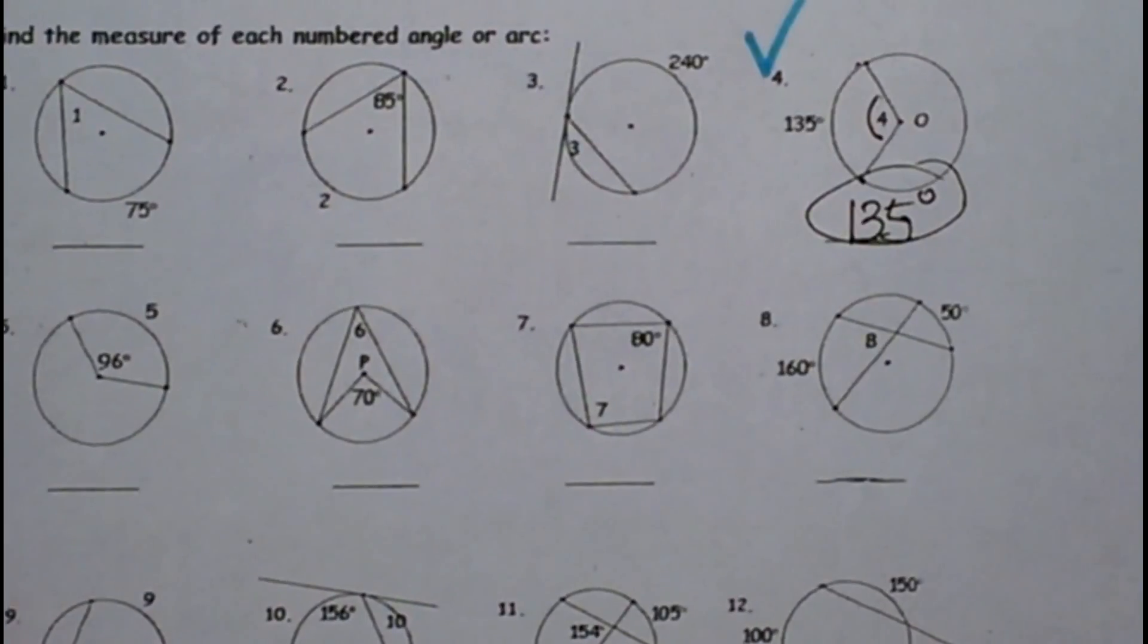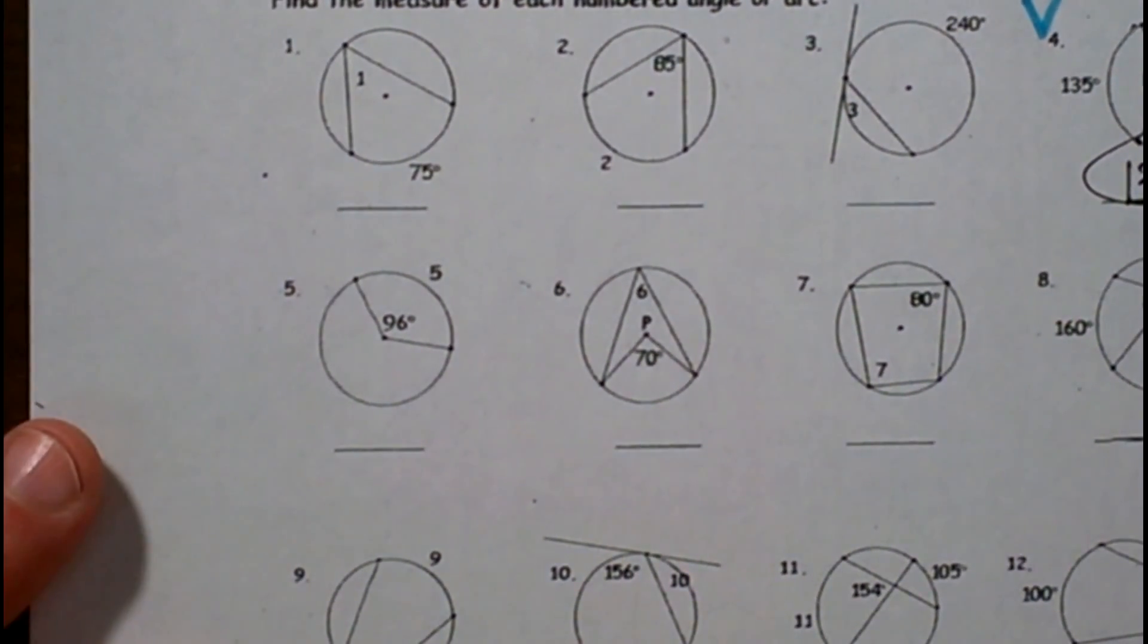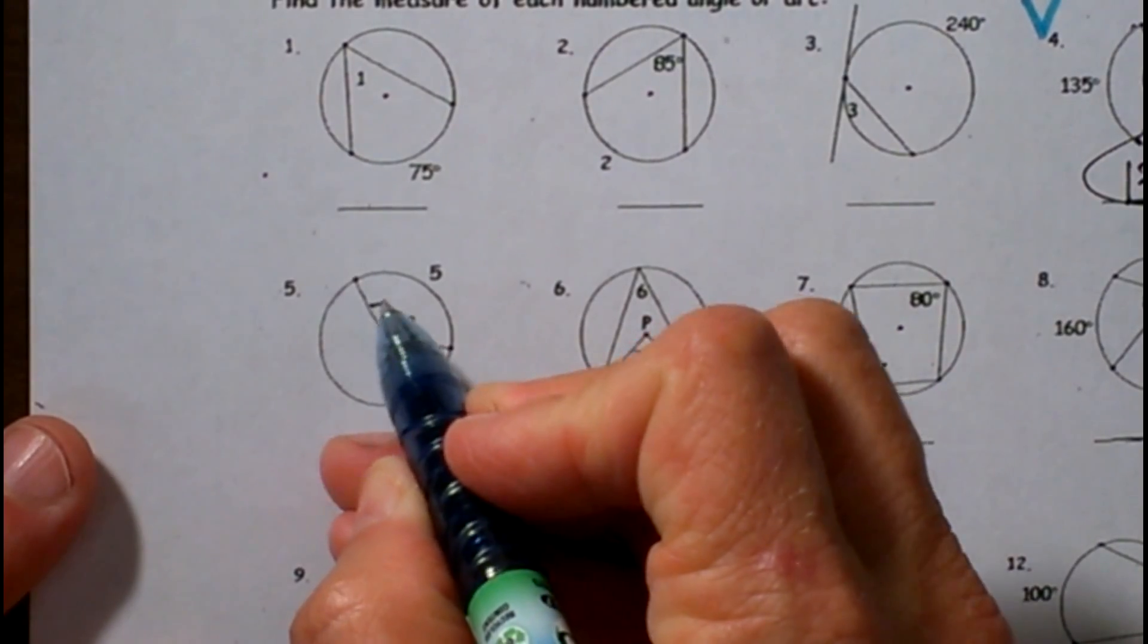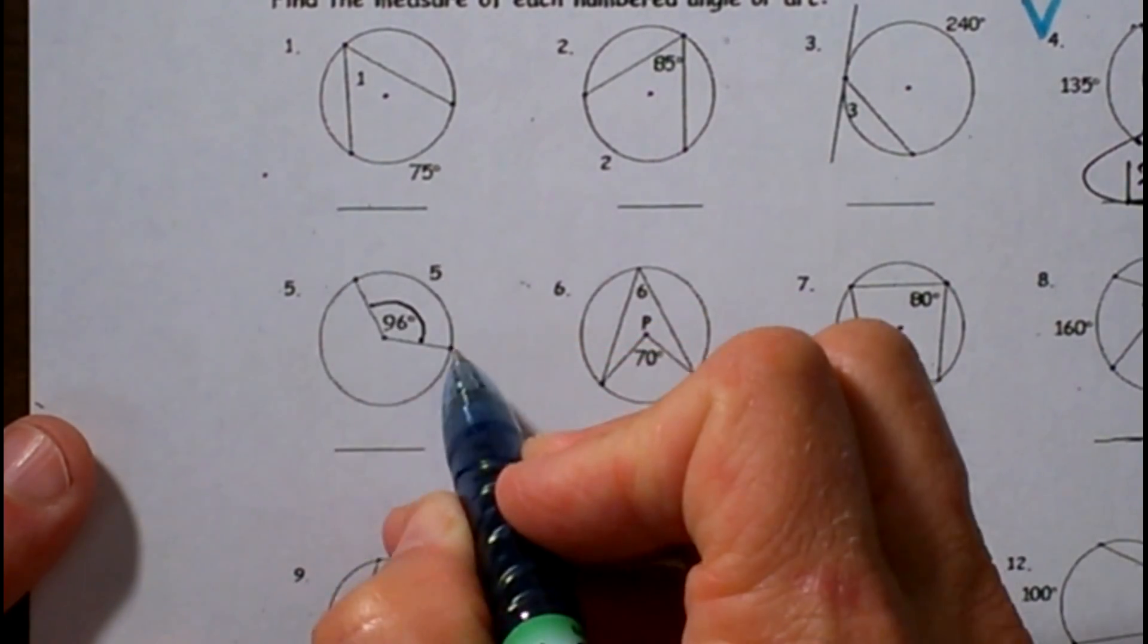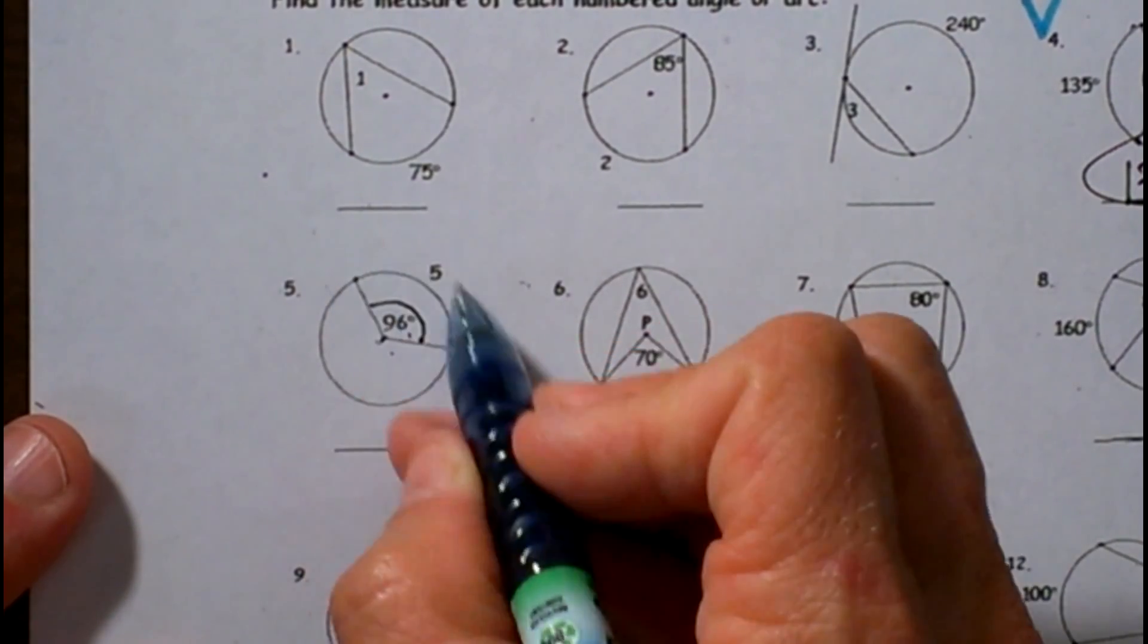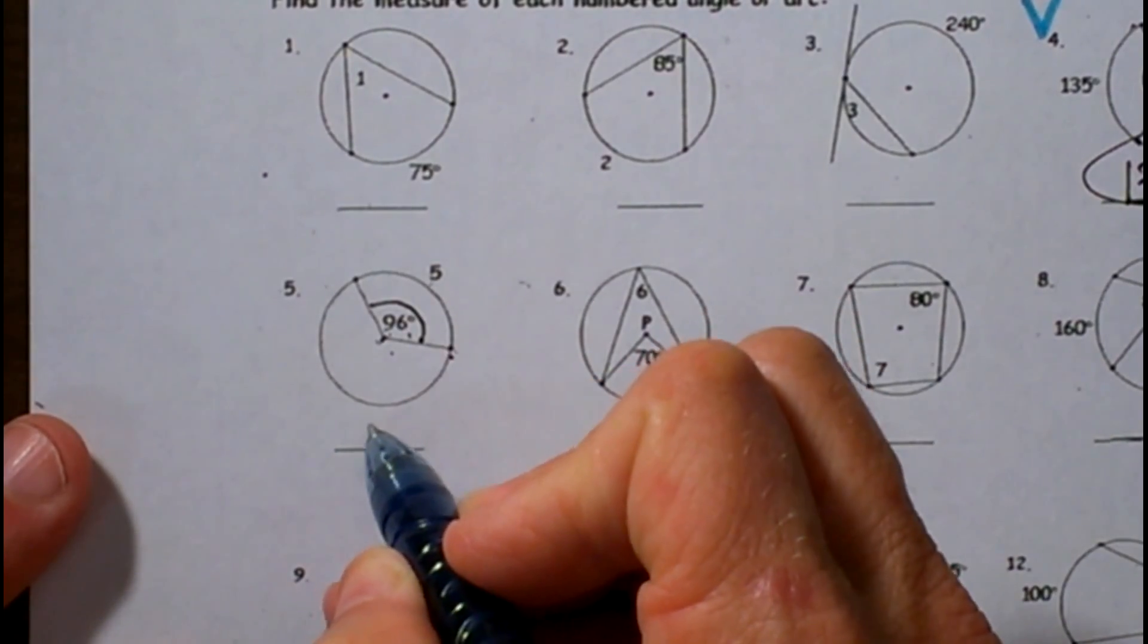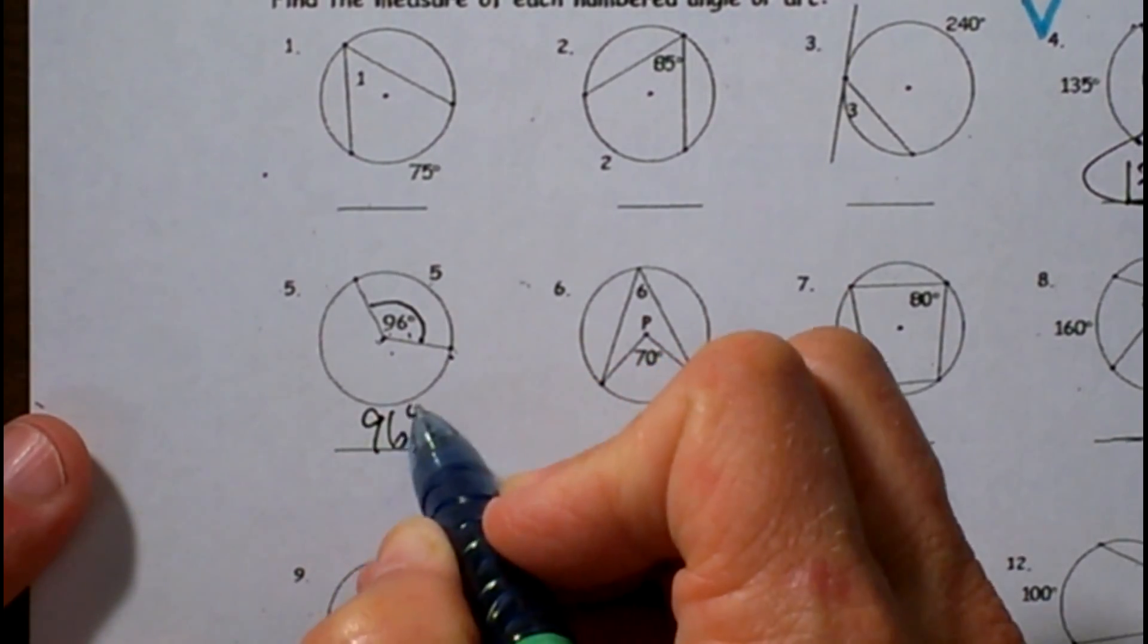Let's look over here at number 5. I'm going to have to move the camera for you. Number 5, we are given an angle and we are trying to find an arc. The angle is again a central angle, and central angles and intercepted arcs are congruent. They are the same measure, so that means angle 5 is 96 degrees also.